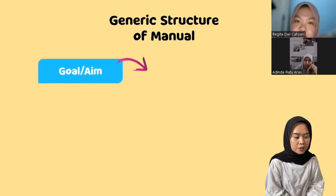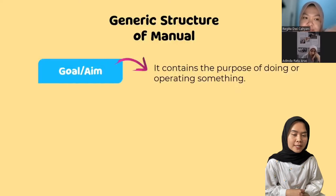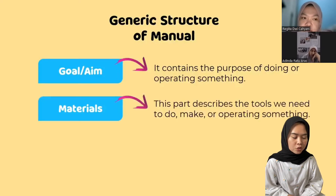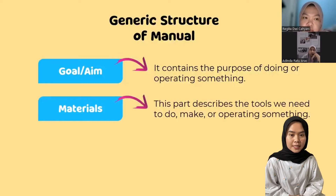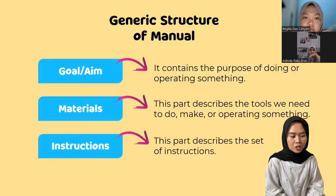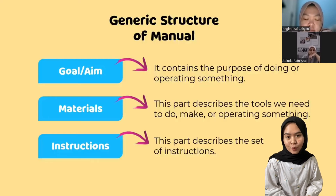The general structure of manual procedure text: goal or aim contains the purpose of doing or operating something — berisi cara melakukan atau mengoperasikan sesuatu. The second is material — it describes the tools we need to do, make, or operate something — berisi alat-alat atau sesuatu yang kita butuhkan untuk mengoperasikan sesuatu. And the last general structure is instruction — menjelaskan tentang instruksi melakukan sesuatu.